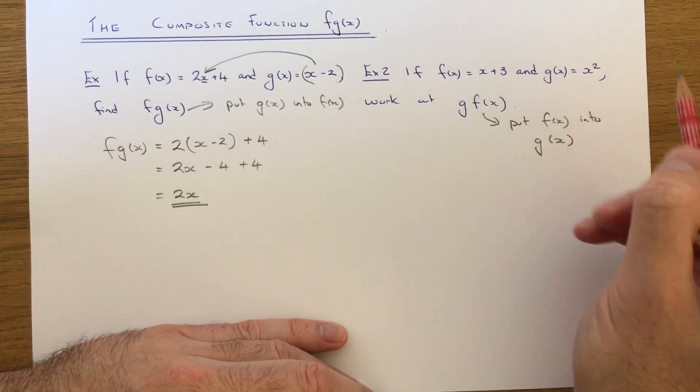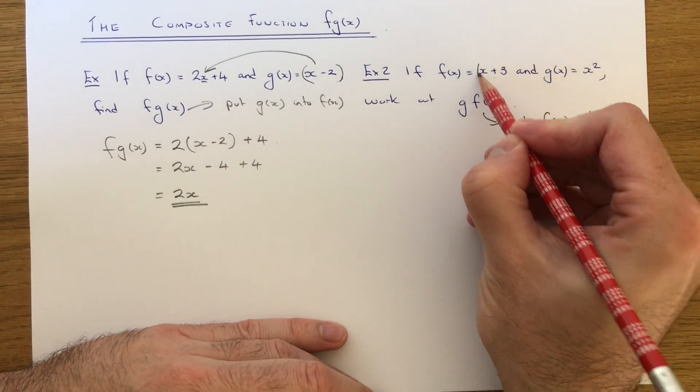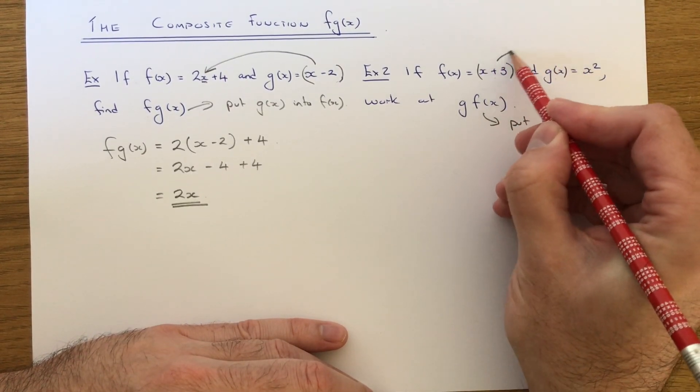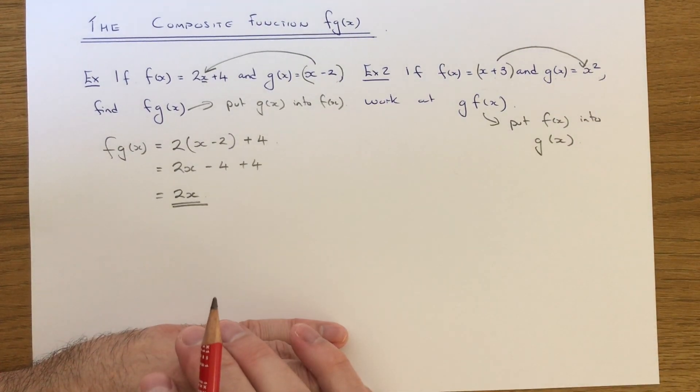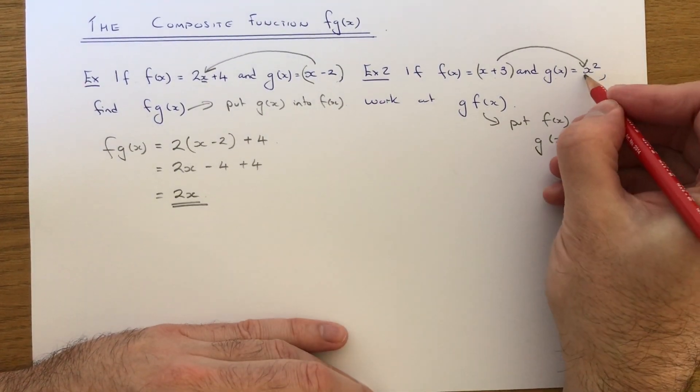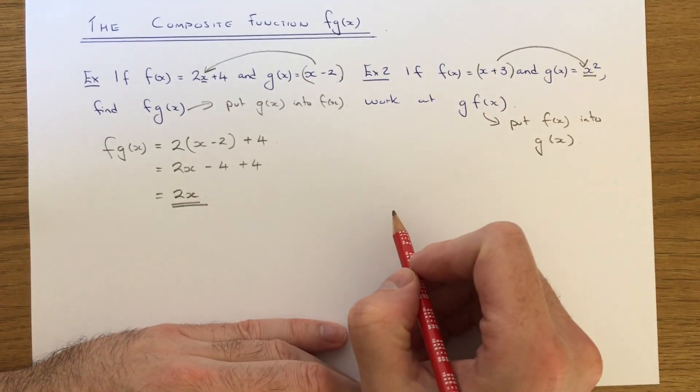Okay, so we need to put f of x, which is here, that needs to go into g of x. So this x here gets replaced with x plus 3.